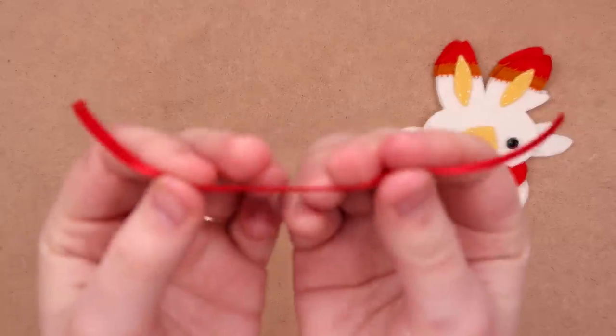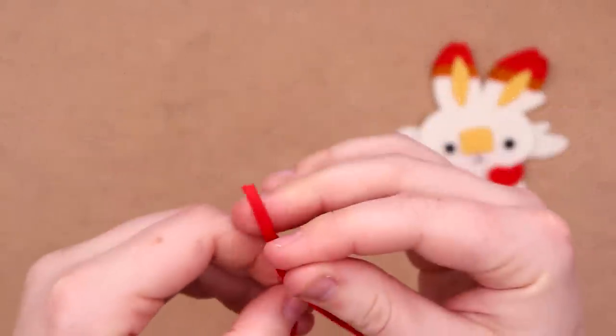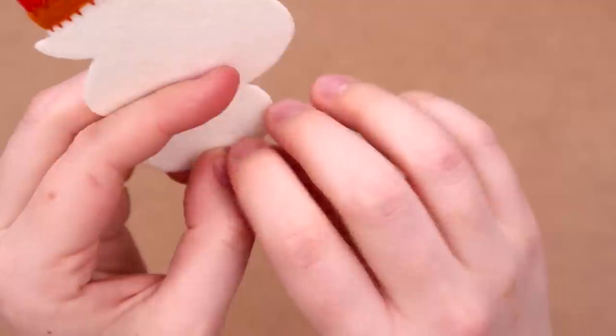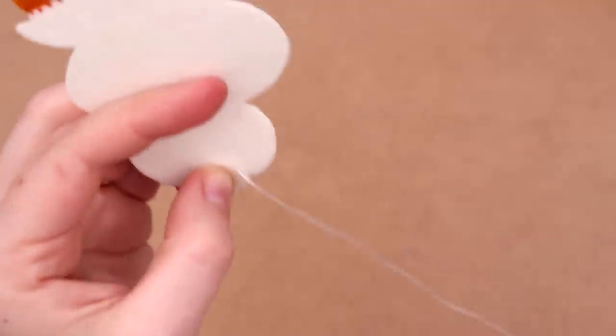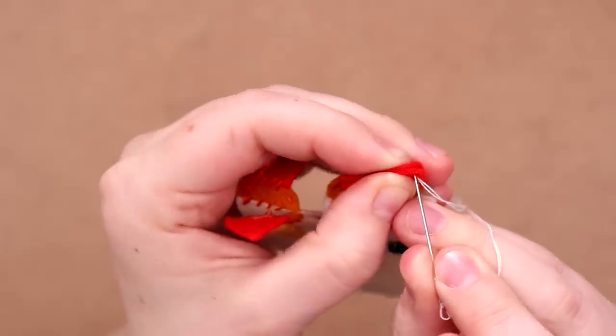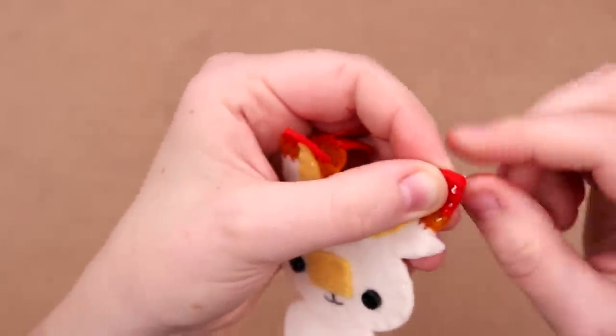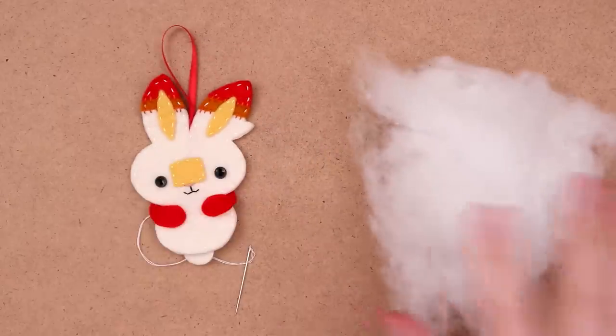So for Scorbunny, as tempted as I was to give it those really silly long lanky legs with those big feet, I decided to just simplify it and stick to the body. Give it its cute little round tail and whatever thing is around its neck.